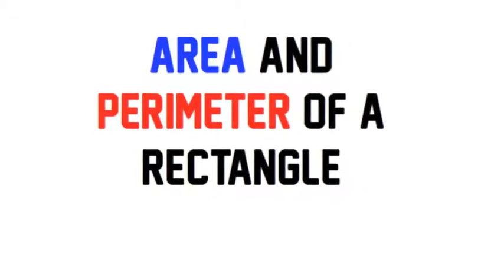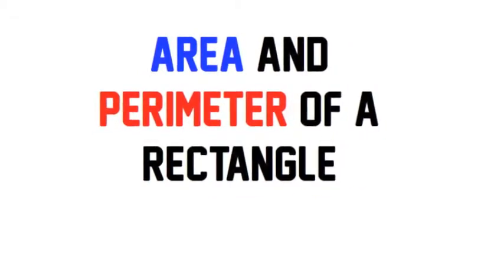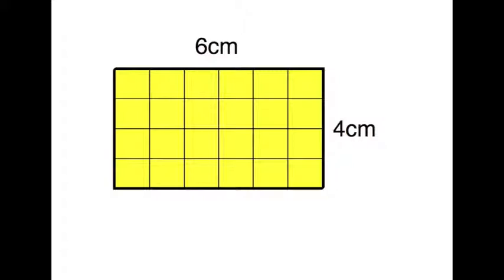Okay, today's lesson is about area and perimeter of a rectangle or a 2D shape. Here we've got a rectangle which is 6cm by 4cm and you can see the little squares there.